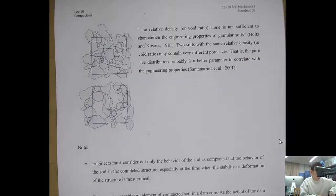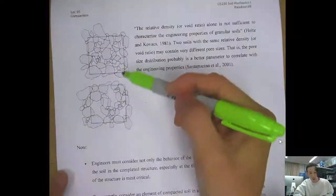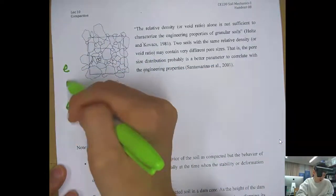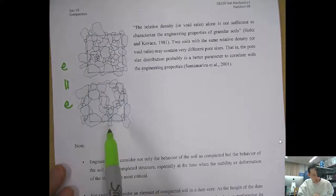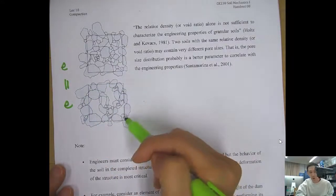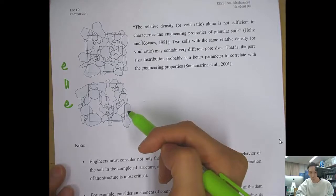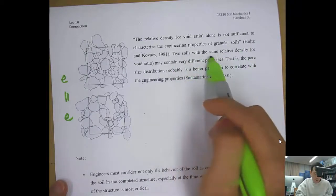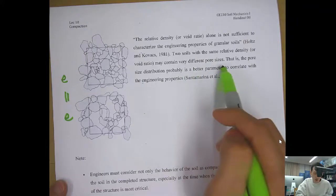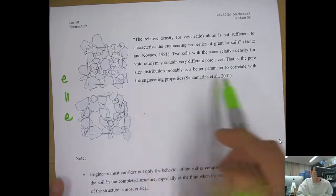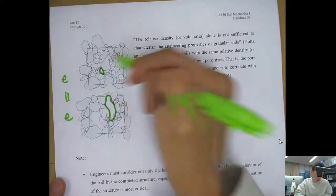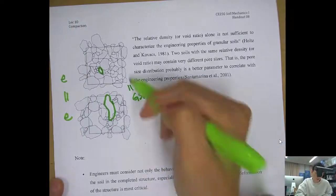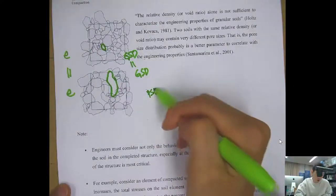From a reference book: two soil cross-sections may have the same void ratio but different structures — one may have a honeycomb structure and will be weaker and more collapsible. Relative density or void ratio alone is not sufficient to characterize engineering properties of granular soil. Two soils with the same relative density may have very different pore sizes, so pore size distribution is probably a better parameter to correlate with engineering properties.